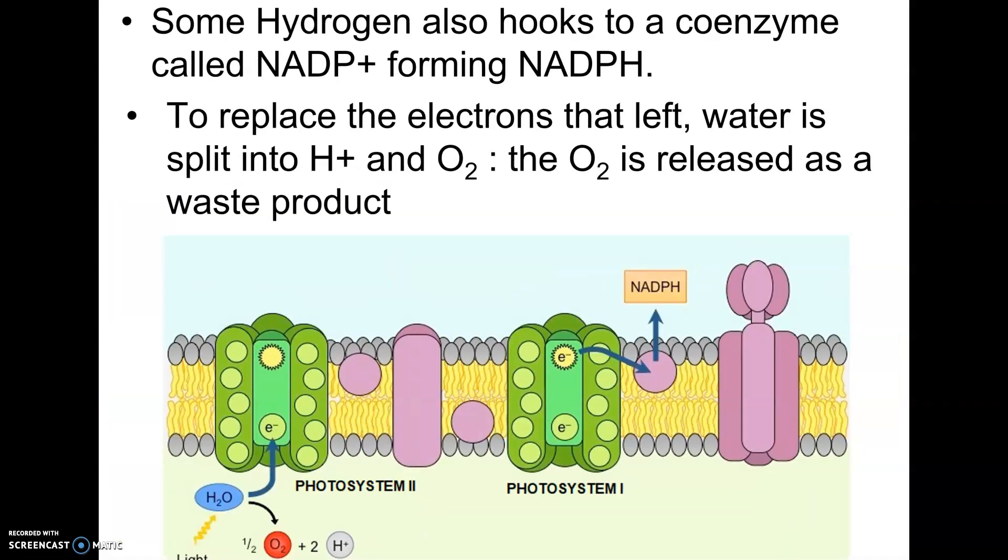And then in the last little section here, the other thing that's made, the NADPH is made from NADP. And to replace the hydrogen that left and the electrons that left, water gets split and oxygen is released as a waste product into our atmosphere. So that's sort of a walkthrough of what's happening in the light reactions.